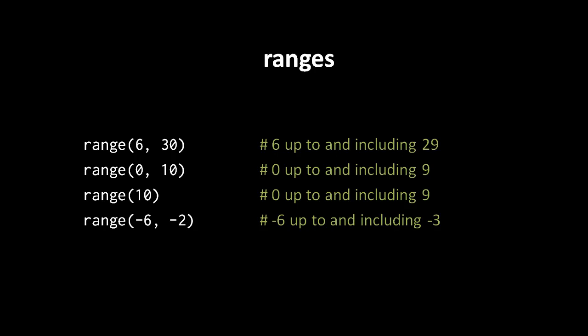Another sequence type we haven't yet discussed is called a range. A range is an immutable sequence of number values, but what makes a range differ from, say, a tuple that happens to consist of just number values, is that a range doesn't actually store necessarily all of its values in memory.